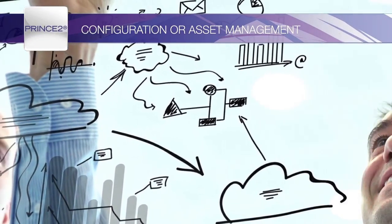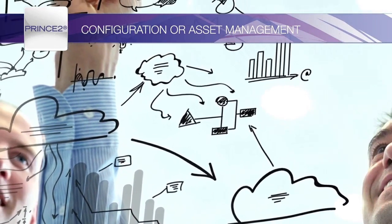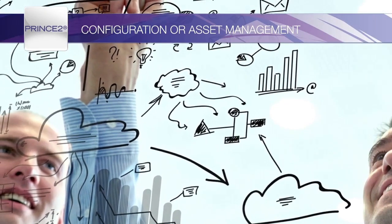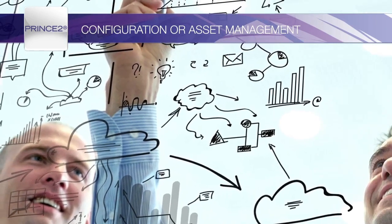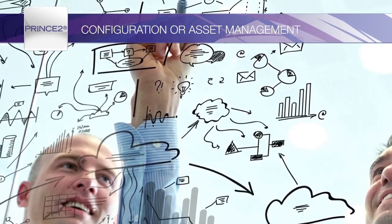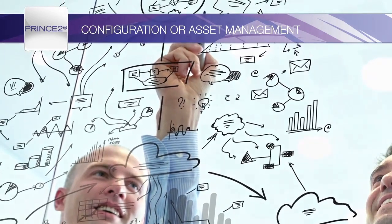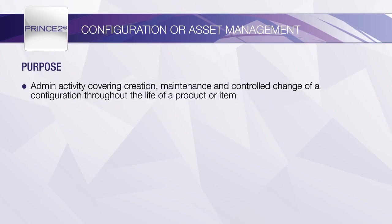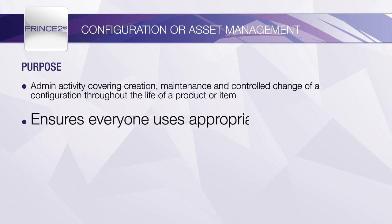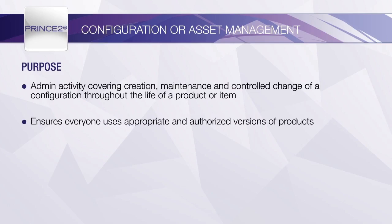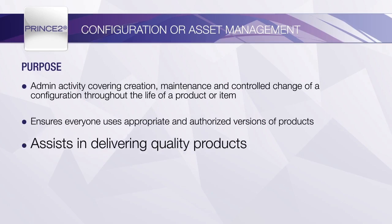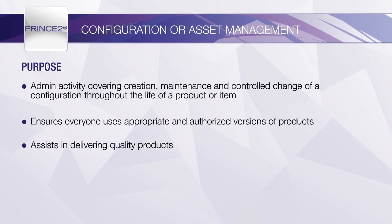Configuration, asset or product management ensures that the products that the project creates are managed and controlled. It also extends to supporting the use of the product after the project has closed, so needs to address both individual projects and the wider organisation. It is a technical and administrative activity concerning the creation, maintenance and controlled change of configuration throughout the life of a product. PRINCE2 recommends that a project support role should be appointed to carry out these activities. Ultimately, the project manager is responsible for ensuring that such a system is working within the project and that all products are identified, managed and controlled.